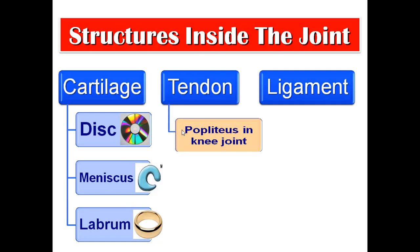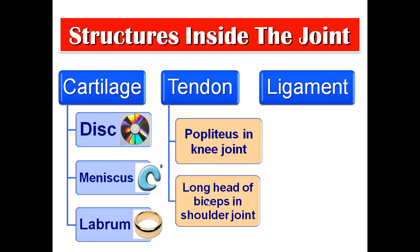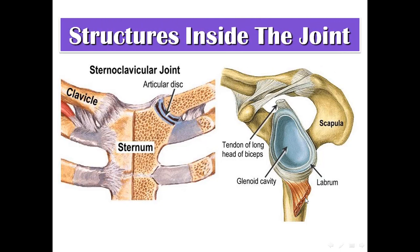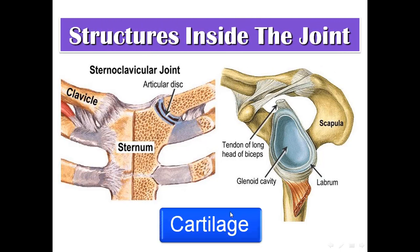The labrum or ring is present in the shoulder joint and in the hip joint. To summarize: structures inside the joint may be cartilage — disc, meniscus, or labrum — tendon, such as popliteus in the knee joint, or ligament, such as the cruciate ligaments.